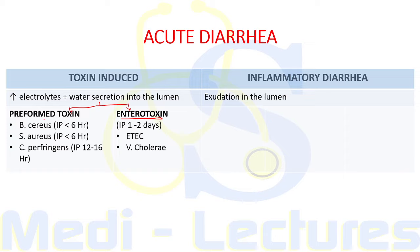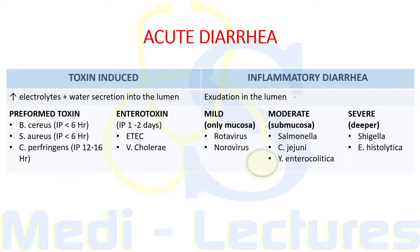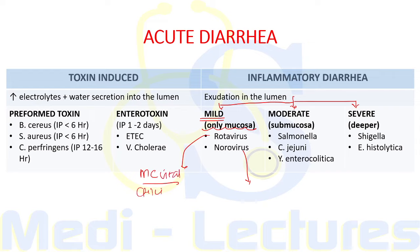Preformed toxins are secreted by bacteria: Bacillus cereus, Staphylococcus aureus, and Clostridium perfringens — mnemonic BSC. The incubation period for these is less than six hours, and for Clostridium it is 12 to 16 hours. Enterotoxins are synthesized in the intestine, so incubation period is one to two days; seen with enterotoxigenic E. coli and Vibrio cholerae. Inflammatory diarrhea is divided into mild, moderate, and severe. Mild involves only the mucosa — caused by rotavirus (most common viral cause in children) and norovirus (most common in adults).